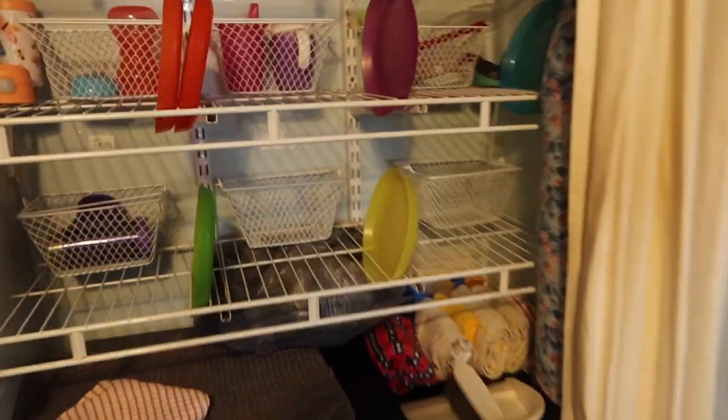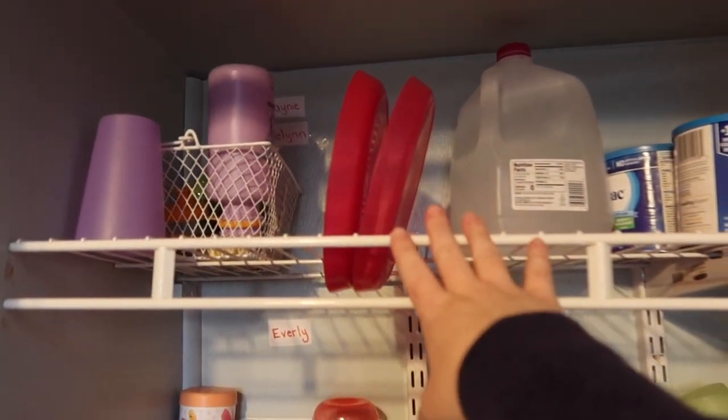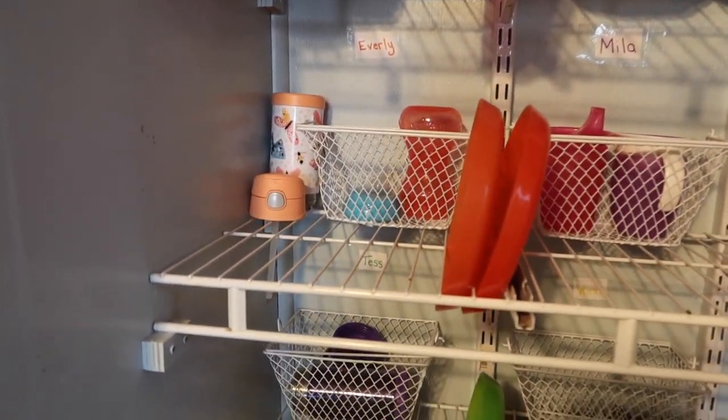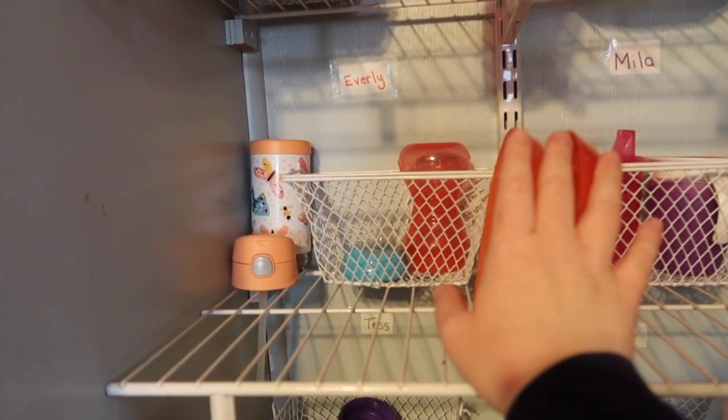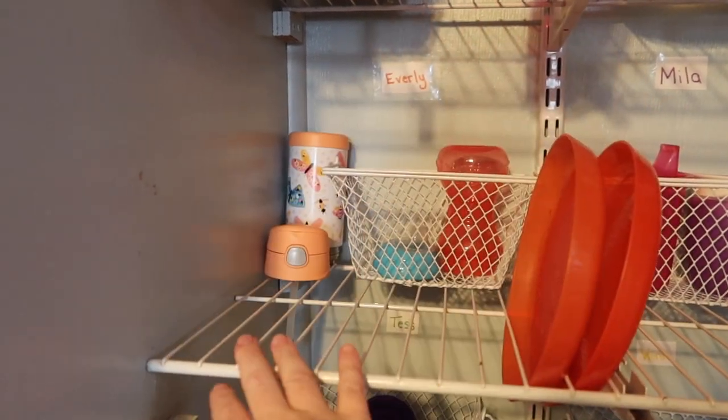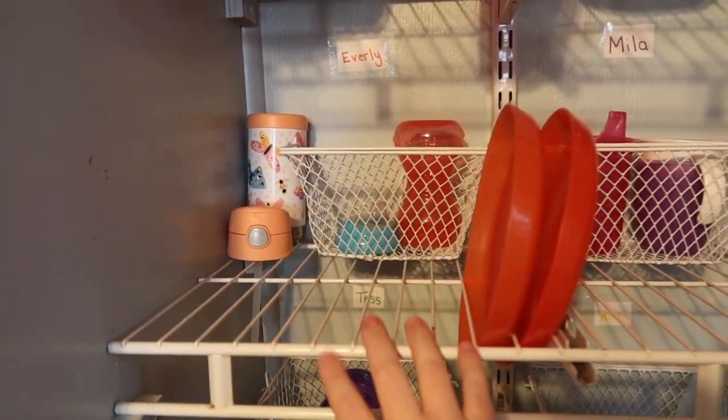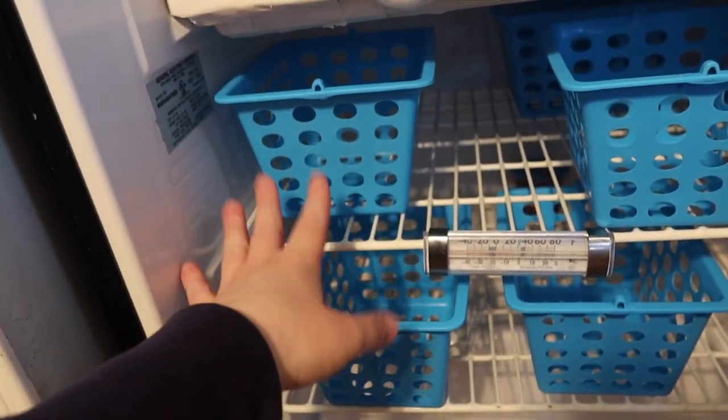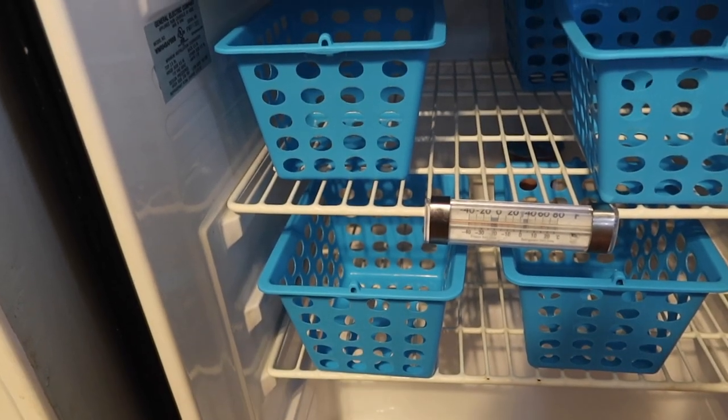This area is all daycare kid stuff. So each kid has their own section. Like these girls are siblings, so they have the same section. The baby has two areas because she still has bottle stuff. Each kid has a plate and their cups. I haven't filled their cups yet because it's the weekend. Each kid gets their own basket. I go through their lunch boxes and just stick stuff in the fridge that needs to be refrigerated like yogurt or if they have a sandwich or chicken nuggets. Everything else just stays in their lunch box up on that shelf.